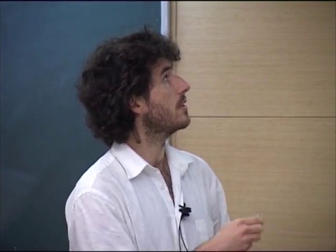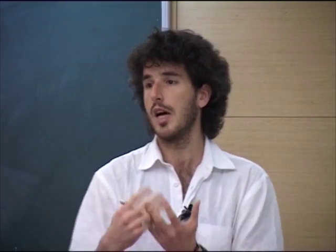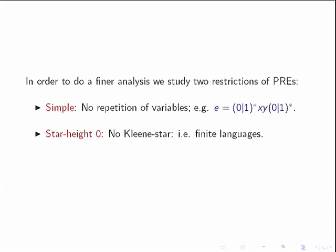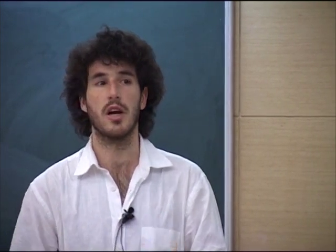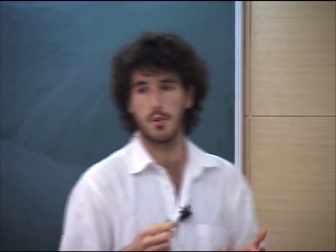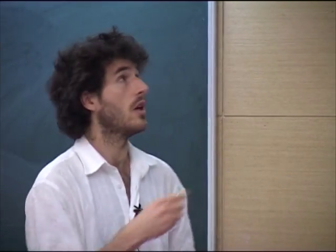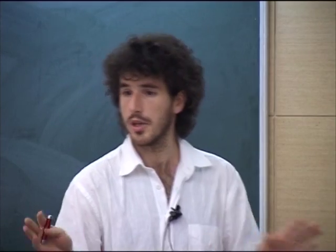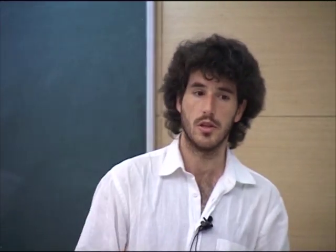The interest is not just in upper bounds — we want to know whether these are actually that difficult. We found that complexity was quite high, so we tried to lower it by defining two fragments: first, forbidding repetition of variables (using each variable at most once), which is a syntactic condition; and second, taking away Kleene star entirely, leaving finite languages.